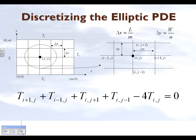What we did was take this rectangular plate and break it up into grids. A particular node at position x, y corresponds to node number i in the x-direction and node number j in the y-direction. We can write down the elliptic partial differential equation in discretized form: the temperature at the node we are interested in can be written in terms of the four surrounding nodes of that particular node. We have derived this before.